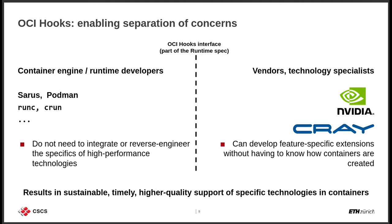On the one hand, container engine or runtime developers — such as RunC, CRUN, Sarus, Podman — do not need to integrate or reverse-engineer specifics of high-performance technologies. On the other hand, vendors or technology experts like Nvidia or Cray can develop feature-specific extensions — in this case hooks — without needing to know how the containers are created. Nvidia specifically created an OCI hook for accessing GPU devices, which Sarus leverages at deployment time so container images can access GPU devices natively without losing any performance.